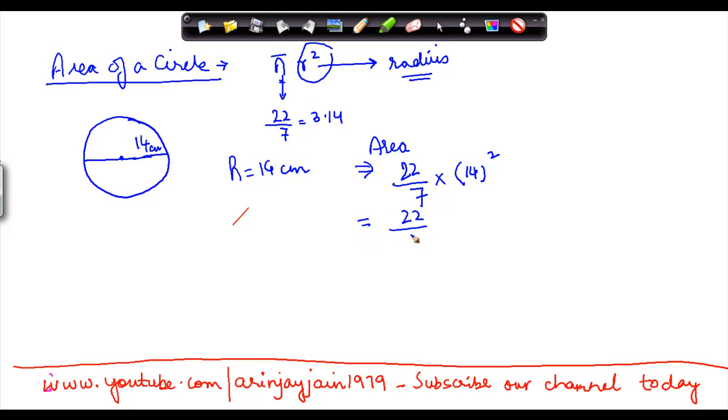If you do that, that will come to 196. Now you cancel 7 here, you basically get 28. 616. So the area of the circle is going to be 616 centimeter squared.